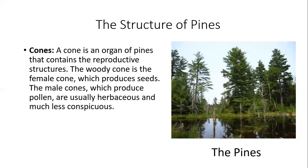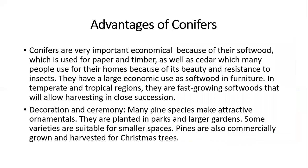Next are the cones, which are the organs of reproduction and contain the reproductive structures. The female cone produces the seeds, and the male cone produces pollen. The female cones are usually larger and more conspicuous. That is the diagram of the pine and how pines look.